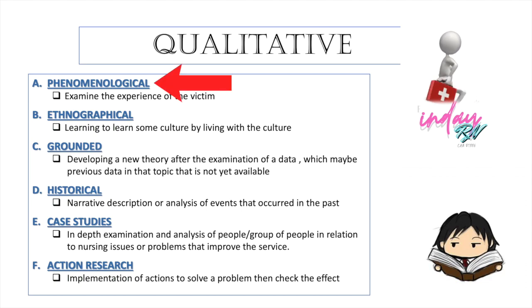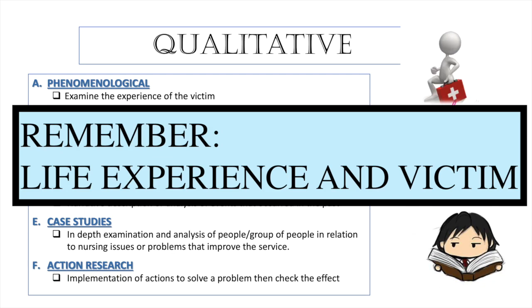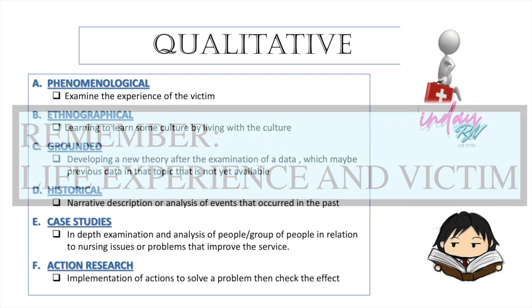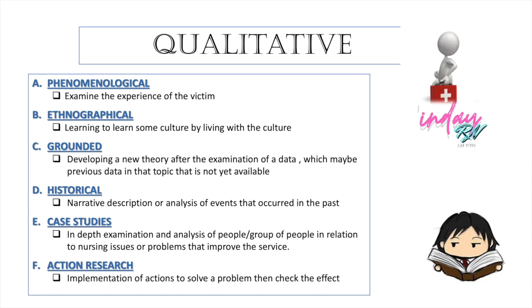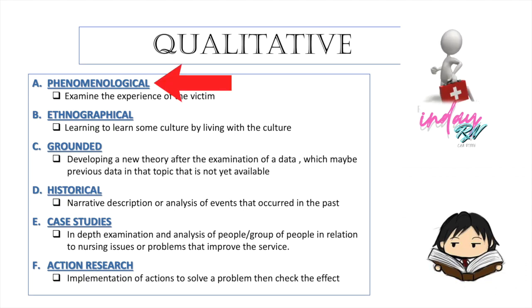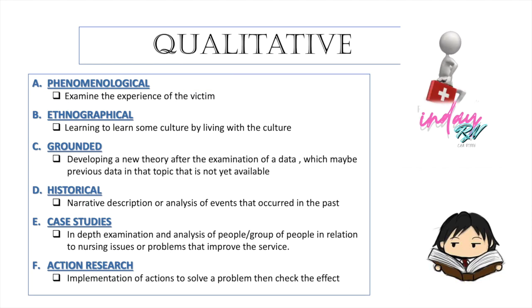An example is that an accident occurred or an MVA crash. The researcher will go in to get information based on the experiences of that victim in the accident. Here in the Phenomenological Approach, it is about the life experiences of the people, and they use this approach to prevent those things from happening to the public. Another example is the experiences of people during the COVID season — how did they prevent it, what did they do. So it's still based on the experiences of people.